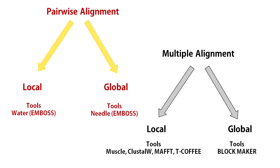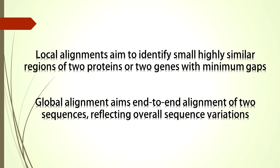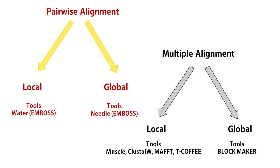In our video on local and global alignment, we showed that there are two basic types of alignment: local and global. We also discussed two tools, Water and Needle, implemented in EMBOSS, that you can use to perform these two types of alignments. Local alignments aim to identify small, highly similar regions of two proteins or genes. Global alignment, on the other hand, aims for an end-to-end alignment of two sequences, reflecting overall sequence variation. Just as with pairwise alignment, a multiple alignment can be local or global, though global multiple alignment is more common.